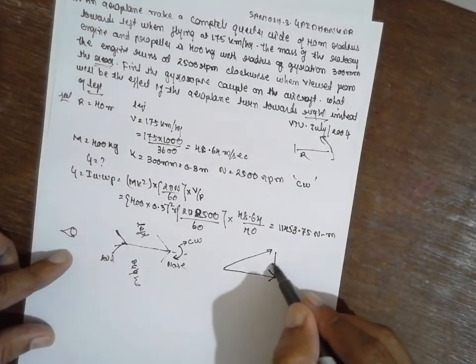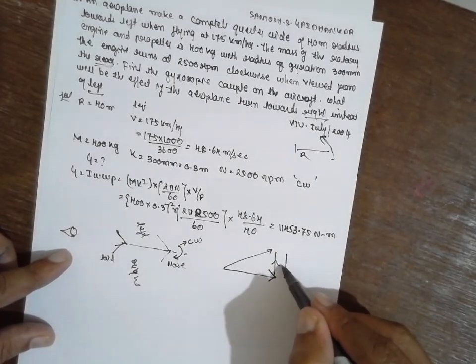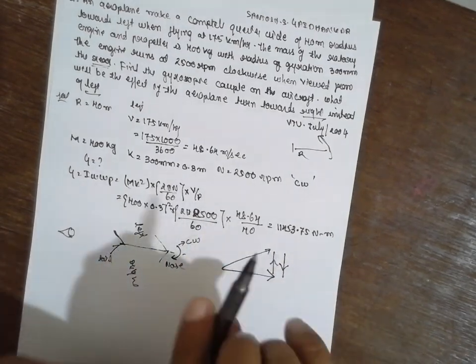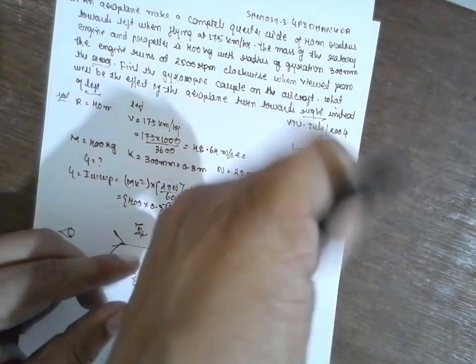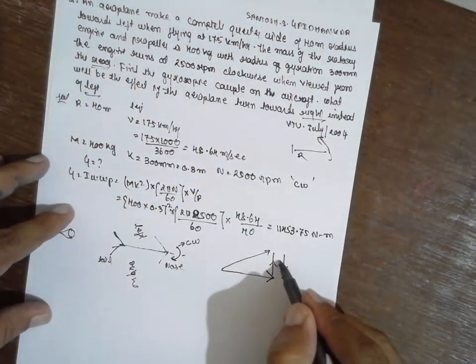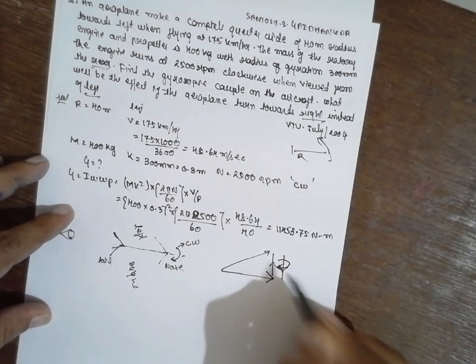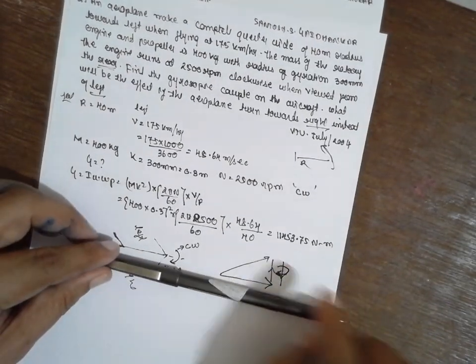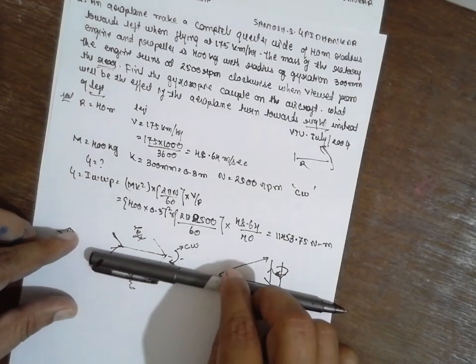This will be gyroscope effect and this is the reactive gyroscopic effect. Now you hold the pen in upward direction and show the direction in this way. Now here, this is the nose, this is tail.